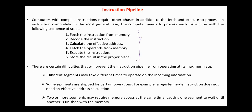There are certain difficulties that will prevent the instruction pipeline from operating at its maximum rate. First, different segments may take different times to operate on the incoming information — for example, fetching the operand from memory. In addition to that, two or more segments may require memory access at the same time, causing one segment to wait until another is finished with the memory.